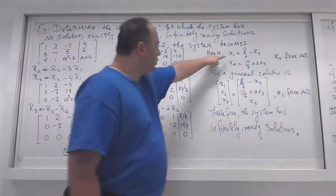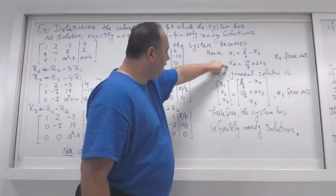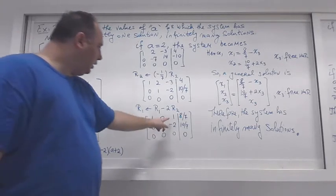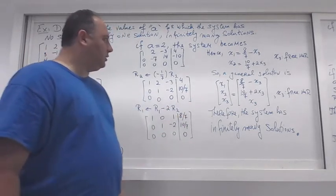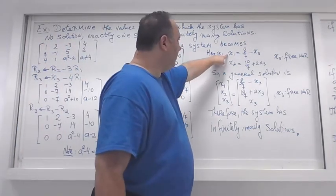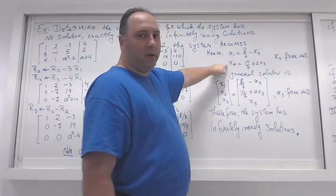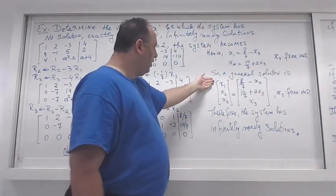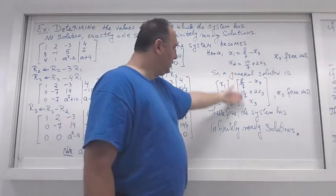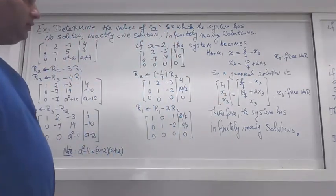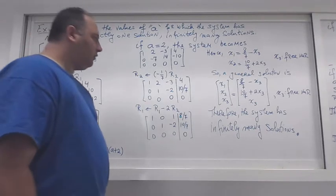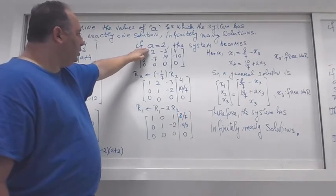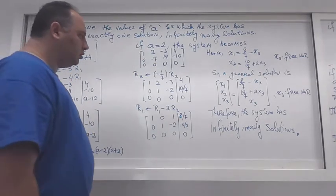Rewriting the system: x1 equals one expression, x2 equals another expression — don't forget to flip the terms to the other side. x3 is the free variable. So the general solution (x1, x2, x3) is given by those expressions with x3 free. Since we have a free variable, there are infinitely many solutions when a = 2.